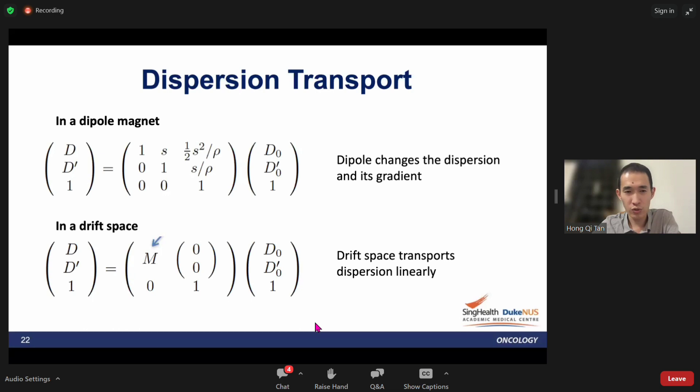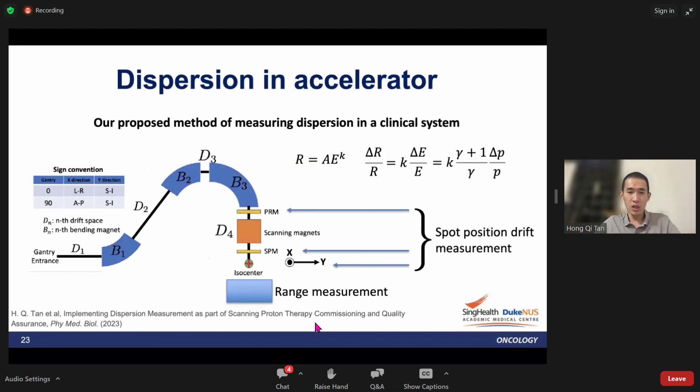Typically in an accelerator, it's actually very difficult to do a dispersion measurement. Sometimes you have to tune your magnetic field, your magnets, or your RF to actually get the deviations and measure the spot position deviations. All these things are not very easy to do in the clinical proton system, but we propose a method to measure dispersion in the clinical system.